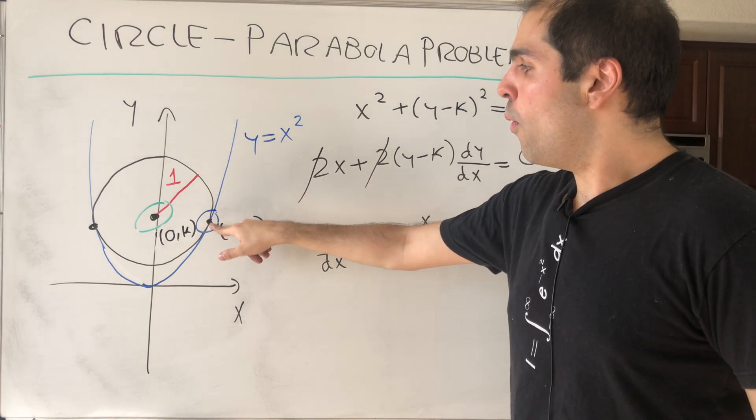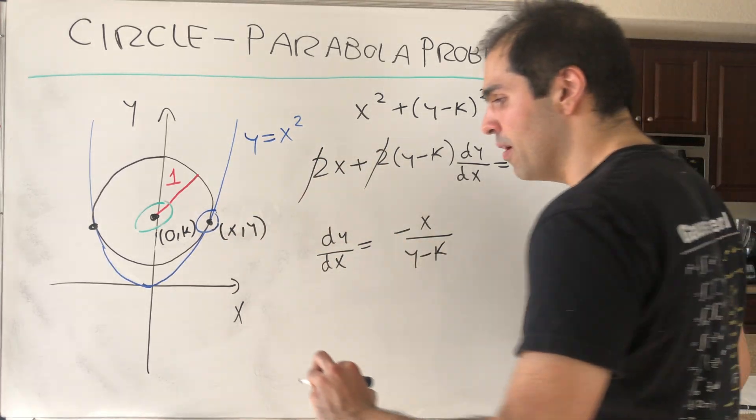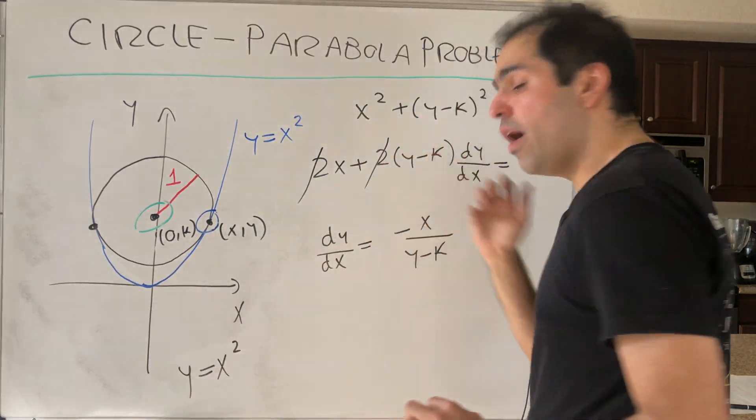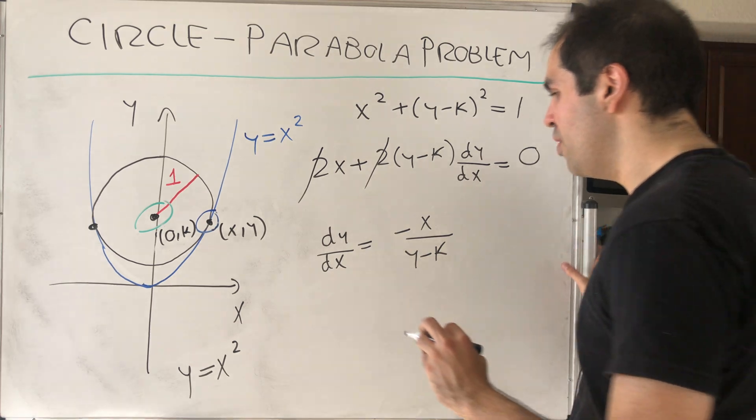On the other hand, the point is also on the parabola, y = x². So dy/dx is actually equal to 2x.